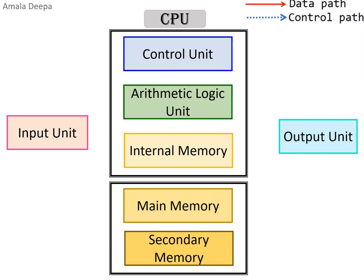The programs and data fed to the computer through the input unit are stored in the main memory. They are then sent to the internal memory of the CPU for processing. The instructions and data flow into the ALU for necessary calculations. The results are sent back to the internal memory and then stored in the main memory. The output flows from main memory to the output unit. Since main memory is volatile, we can store its contents in secondary memory for future use.